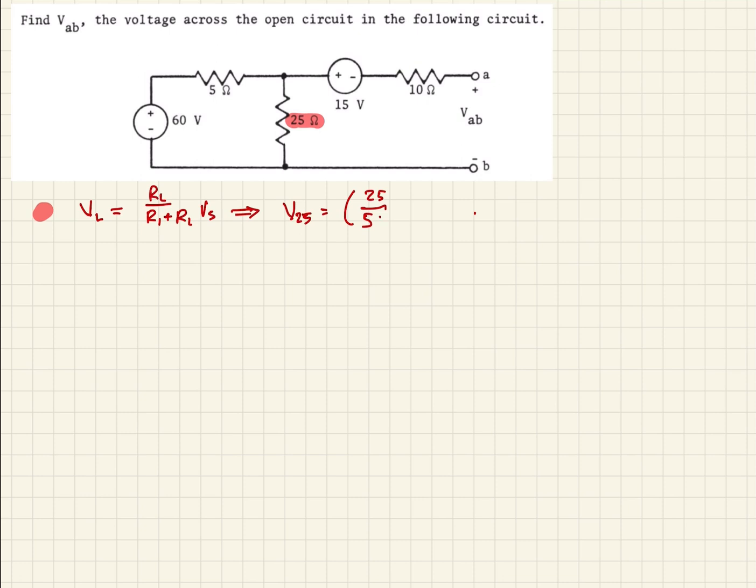And that's going to be times our source voltage, which is 60. So if we were to plug all of that in, it's going to be 25 over 30 times 60. Plug that into the calculator, and we come up with 50 volts. So that's the voltage drop across this resistor right here, 50 volts.